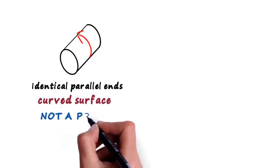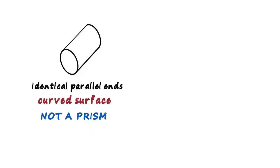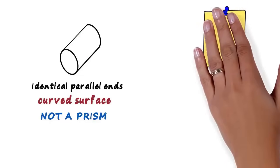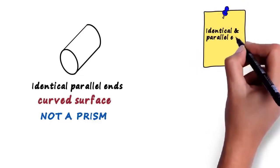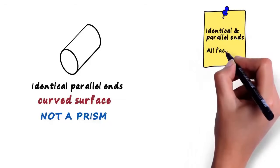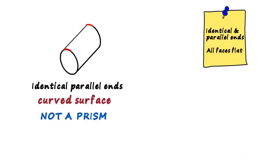Hence, it's not a prism. I want to emphasize there are only two things that make a three-dimensional shape a prism: identical and parallel ends, and all its faces flat. Here the ends are flat but the surface is curved. So it's not a prism.